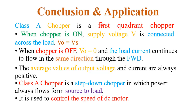In conclusion, class A chopper is a first-quadrant chopper, meaning the output voltage and current are always positive, whether the chopper is on or off. When the chopper is on, the supply voltage is connected across the load so output voltage equals VS. When the chopper is off, output voltage equals zero, and load current continuously flows in the same direction through the freewheel diode. The average output voltage and current are always positive. Class A chopper works as a step-down chopper in which power always flows from source to load, and its main application is controlling the speed of a DC motor.